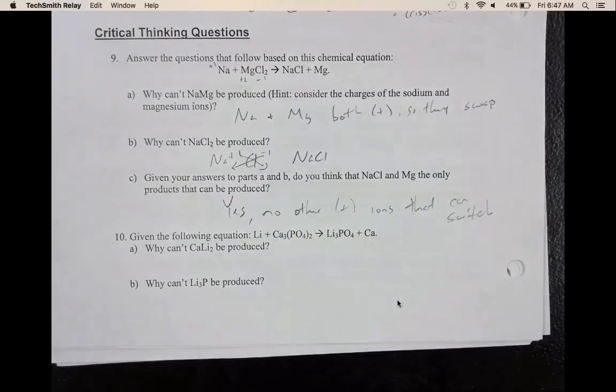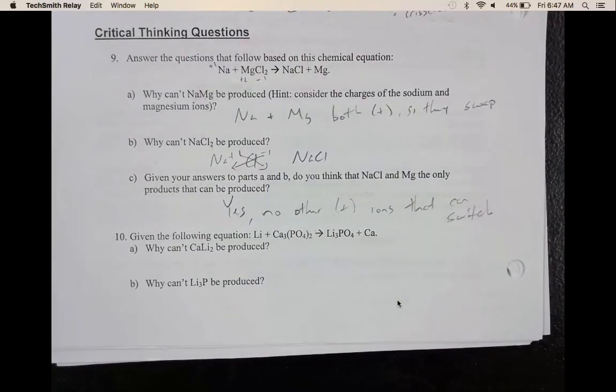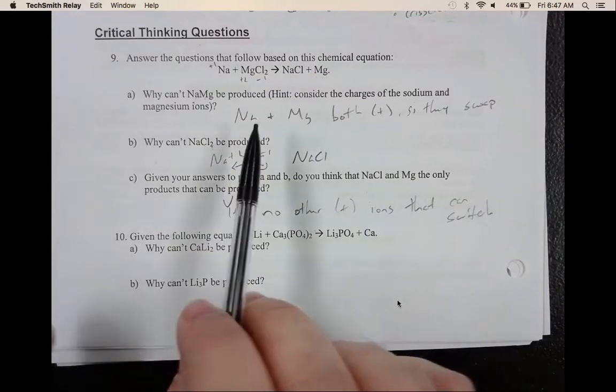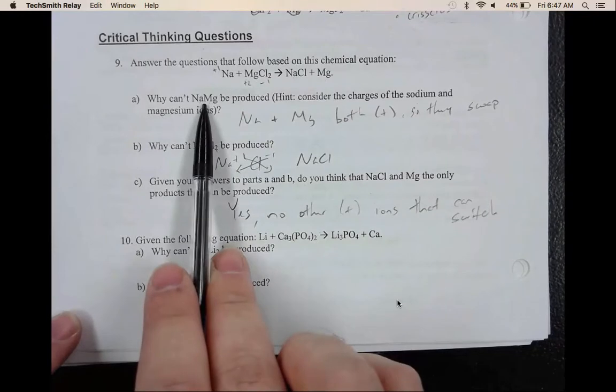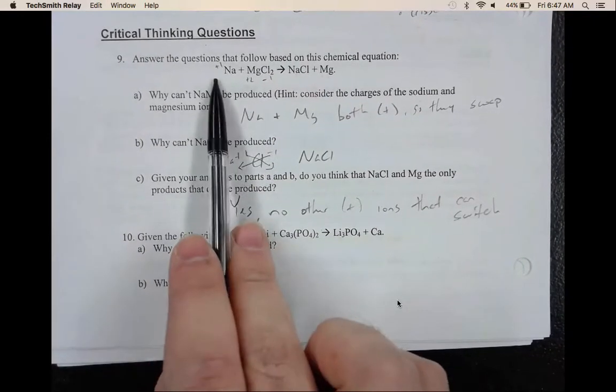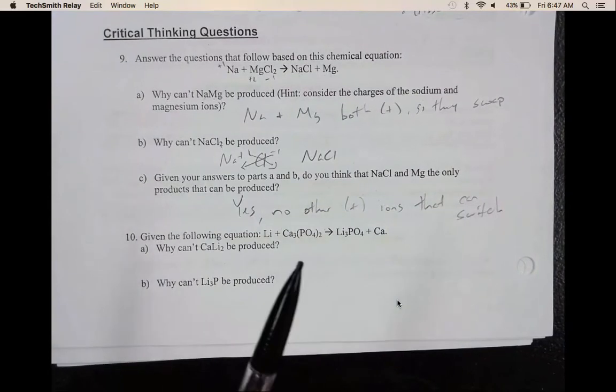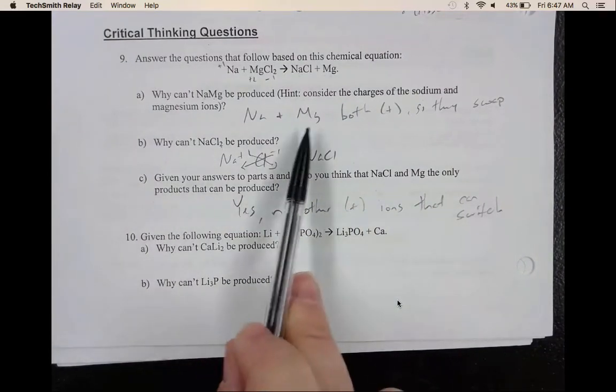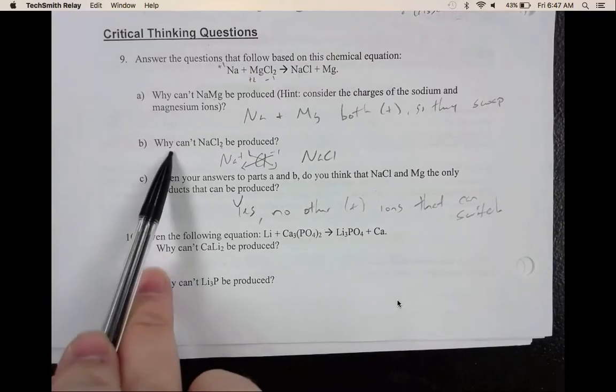So next, question 9. Question 9 and question 10 go together. So I figured I'd do 9 and then you guys can base what you do in 10 off of what I do in 9. So we have 9A. So it's asking us why can't Na and Mg produce? So remember, Na and Mg, they are both positive. So in ionic bonds, we cannot have two positives. So if they both swap, they will not bond together because they are not sharing their electrons and there's no opposite charge attracting them.